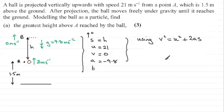So when we substitute our values in for V we've got 0 and then that's equal to U squared that's 21 squared plus 2 times the acceleration which is minus 9.8 times S which is H. So if I add this value to both sides I'm going to have 2 multiplied by 9.8 times H equals 21 squared.